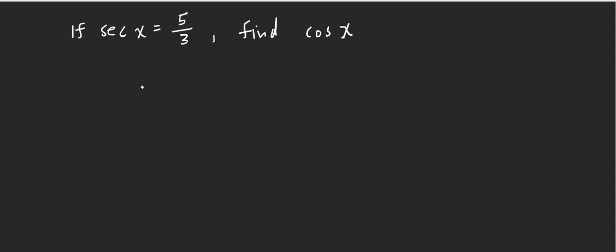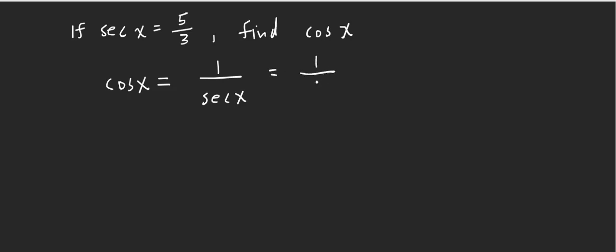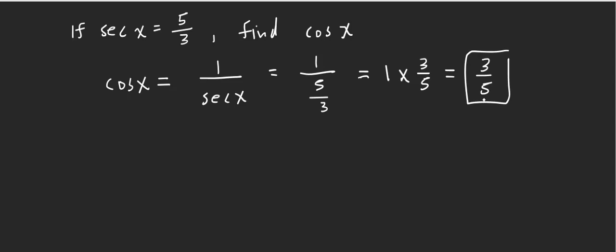Let's take a look at some examples. If secant x equals 5 over 3, find cosine x. Cosine x is 1 over secant x because they are reciprocals. Secant x is 5 over 3, so cosine x is 1 over 5/3, which equals 1 times 3/5, giving us 3 over 5.